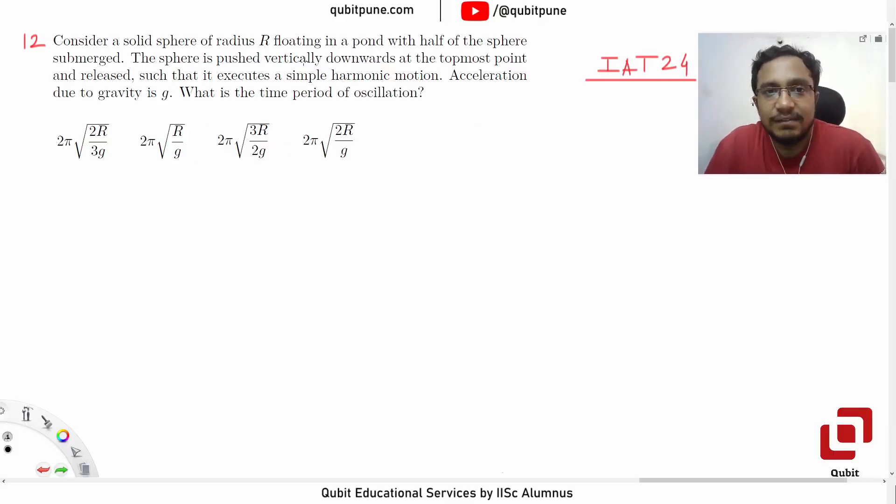Consider a solid sphere of radius r floating in a point with half of the sphere submerged. The sphere is pushed vertically downwards at the topmost point and released such that it executes simple harmonic motion. Acceleration due to gravity is g. What is the time period of oscillation? Options: 2π√(2r/3g), 2π√(r/g), 2π√(3r/2g), 2π√(2r/g).